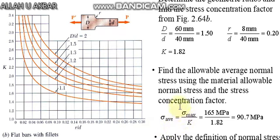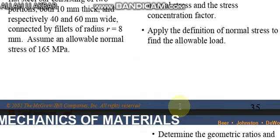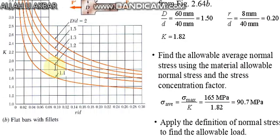Sigma average equals sigma max divided by K. In the problem, we have the value of sigma max: 165 megapascals. This is the allowable normal stress: 165 megapascals divided by K stress concentration factor.